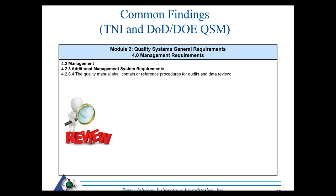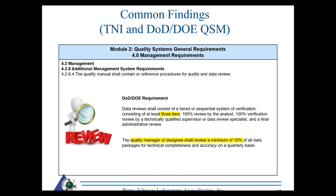Under 4.2 management, the quality manual must contain information on data review, audits, and procedures for those activities. DOD/DOE has additional requirements for a three-tier data review, specifying what each tier shall contain and the percentage of review for each tier. It also requires the quality manager or designee to review at least 10% of data packages. Labs transitioning to DOD/DOE often miss these tiered and quality manager requirements.